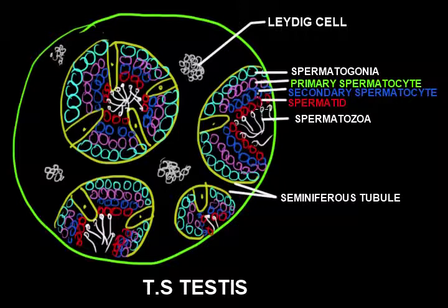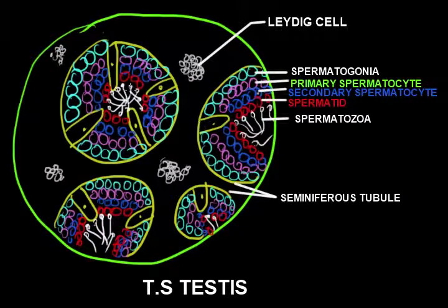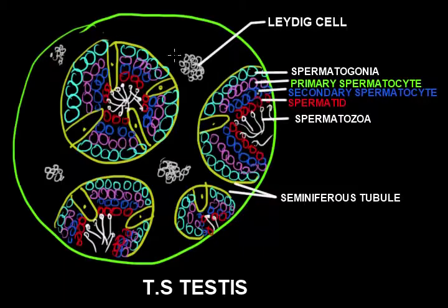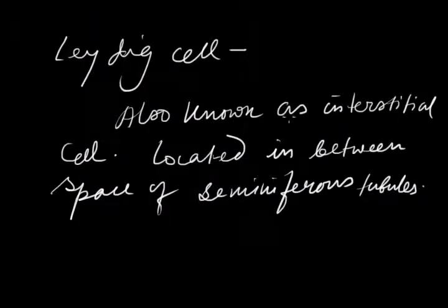Beside the spermatogenic cells, the seminiferous tubule also contains another structure — the Sertoli cells. These are the Sertoli cells, which are elongated structures. There is also another important structure: the Leydig cells. These are the Leydig cells, also known as interstitial cells, as they are located in the interstitial space between the seminiferous tubules.